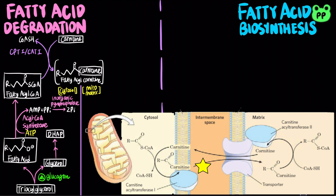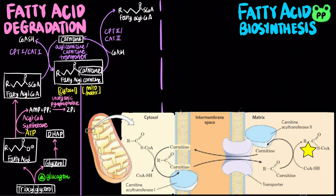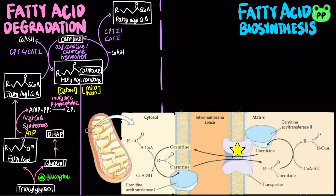Fatty acyl-carnitine then passes through the outer mitochondrial membrane into the intermembrane space and moves into the mitochondrial matrix by facilitated diffusion through the acyl-carnitine-carnitine transporter of the inner mitochondrial membrane. In the last step of the carnitine shuttle, carnitine acyl-transferase-2 (CAT2), located on the inner mitochondrial membrane, transfers the fatty acyl group from carnitine to coenzyme A, regenerating fatty acyl-CoA and carnitine in the mitochondrial matrix. Carnitine re-enters the intermembrane space through the acyl-carnitine-carnitine transporter. Fatty acyl-CoA in the mitochondrial matrix is now ready to be degraded by beta-oxidation to generate energy.